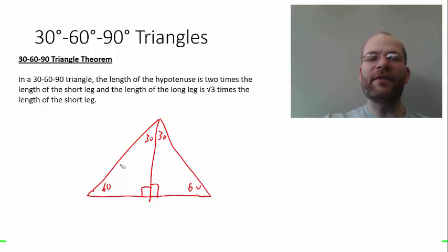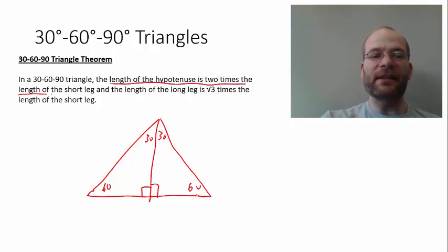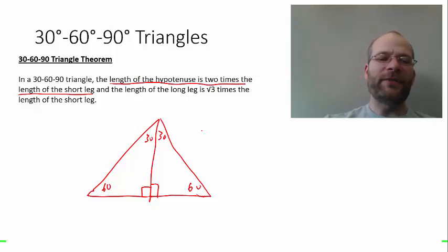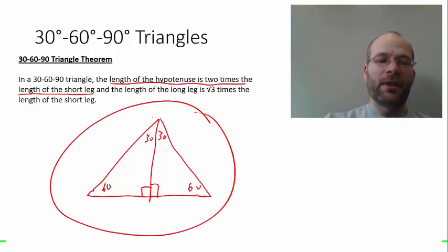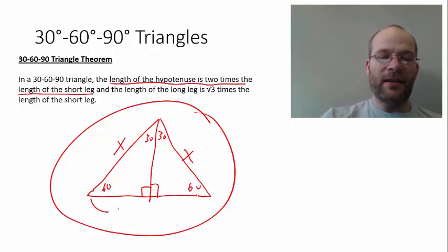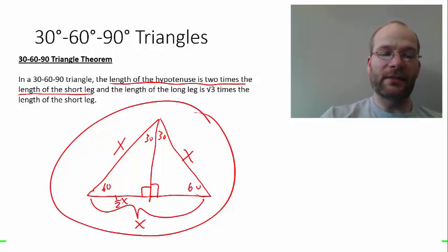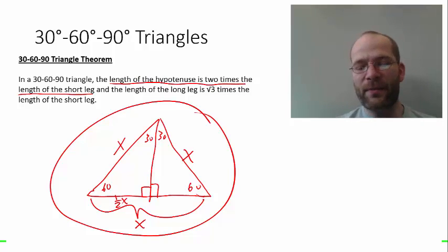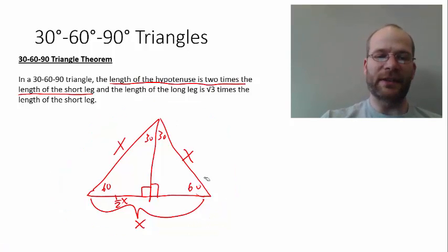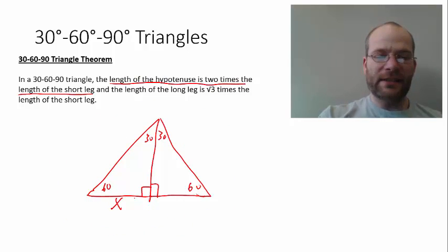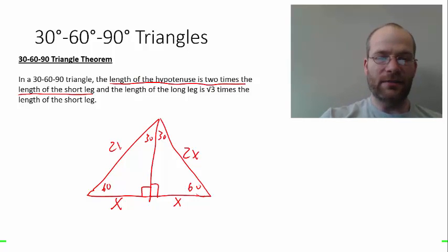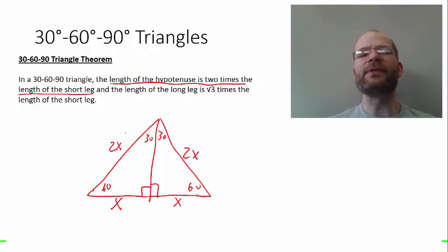That leads to the first part of the rule: the hypotenuse is 2 times the short leg. If the full equilateral triangle has side length x, then each half has a short leg of one-half x, or equivalently, if the short leg is x then the hypotenuse is 2x. That's where the first part of the rule comes from — the hypotenuse in a 30-60-90 triangle is always twice the short leg.